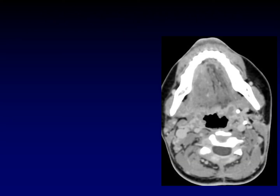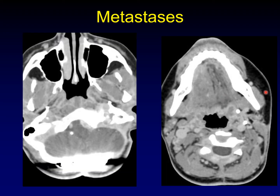Here is another example with hemi-tongue atrophy: fatty replacement on one half, normal muscle on the other. Looking to the hypoglossal canal, we find a large skull base metastasis secondarily invading into the hypoglossal canal as the cause.